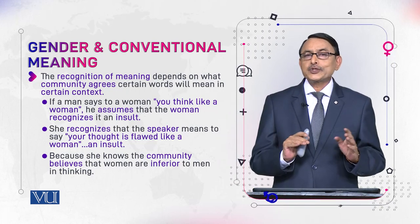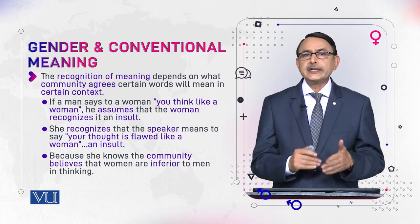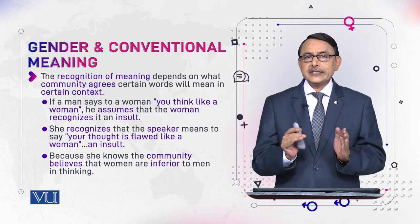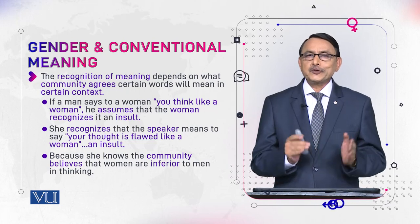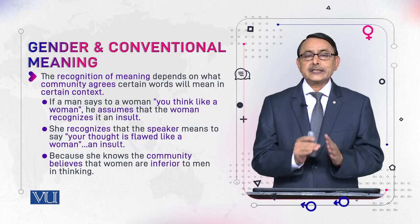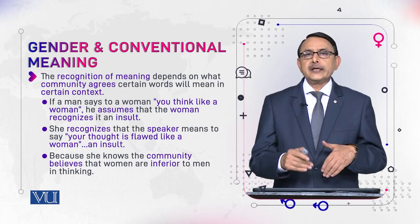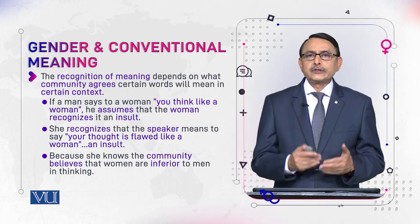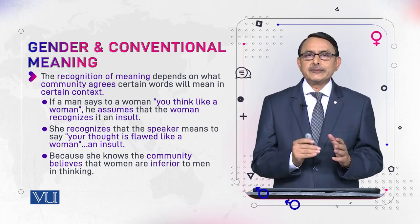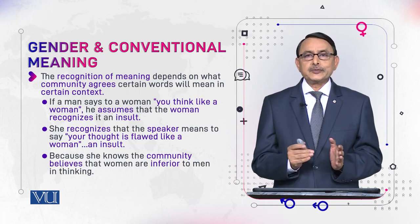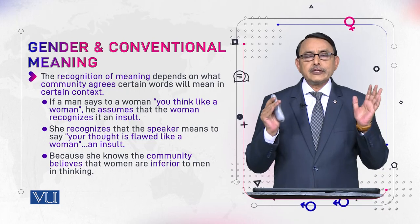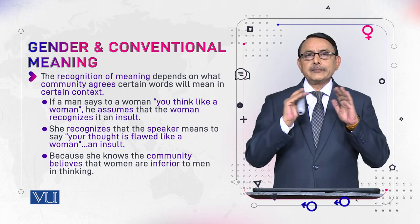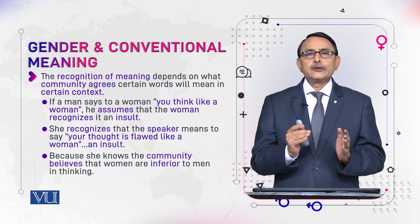She recognizes this because the whole community understands women as intellectually inferior to men in thinking. The community agrees upon this conception of woman, and that is why, like literal meaning, wherever this expression is uttered, it is taken in this sense. So both literal meaning and non-natural indirect meaning are results of cooperation between members of a speech community. Because of this cooperation, we form shared knowledge, and whenever we communicate, that shared knowledge helps us understand each other.